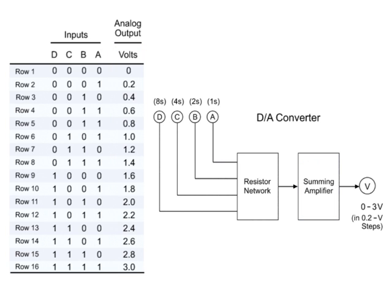With an input of 0, 0, 0, 0, according to the truth table, the voltage output would be 0. Inputting 0, 0, 0, 1 will result in an output of 0.2 volts.